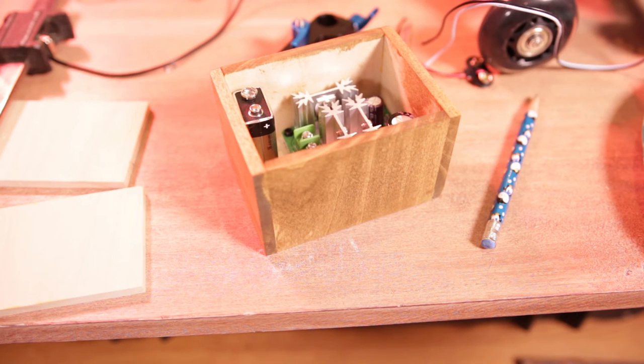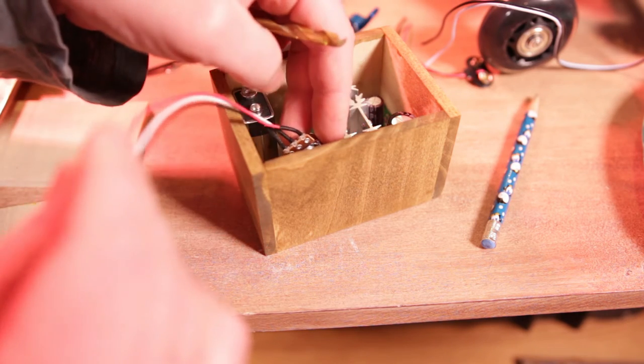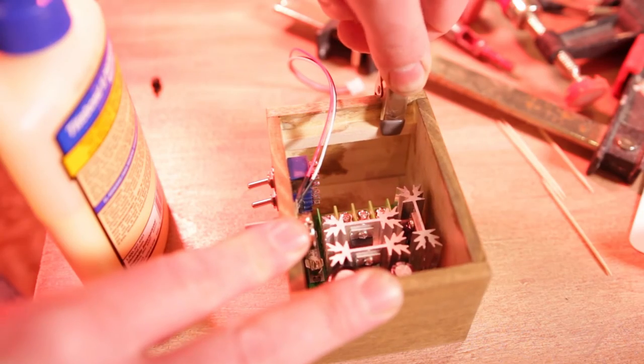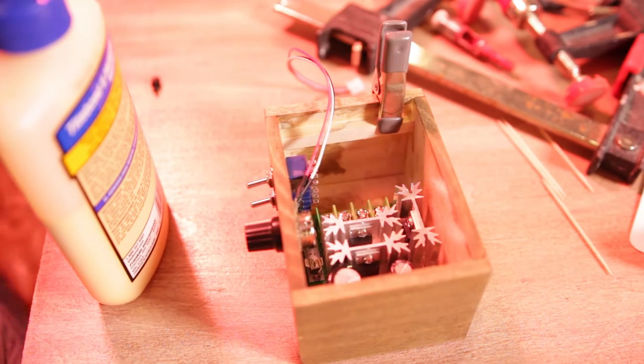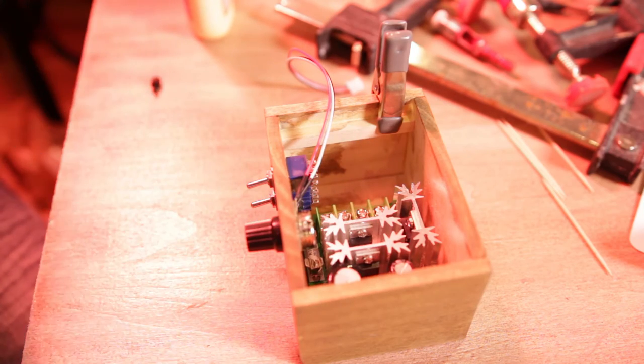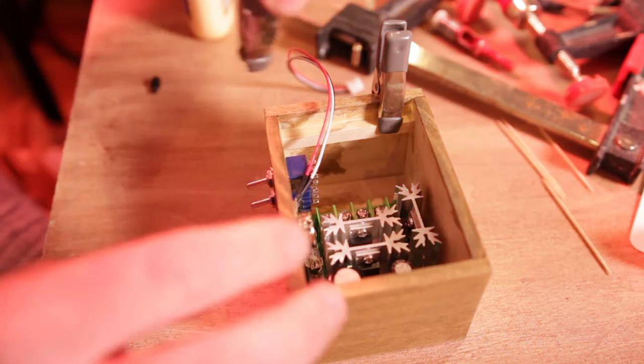And after that was all set up, I went and figured out where I wanted my speed control knob and my switches to go. And after that, I mounted some rails. These rails are going to hold magnets. There's going to be one set of magnets inside the box and one set on the lid.